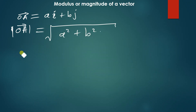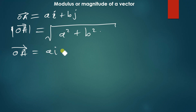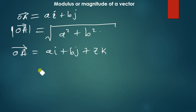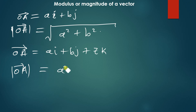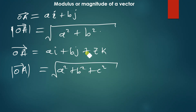So if OA is a 3D vector — meaning it has three components: X, Y, and Z — to find its magnitude you do the same but include all three terms. You are going to have A squared plus B squared plus C squared, then find the square root of that. That's the magnitude of a vector.